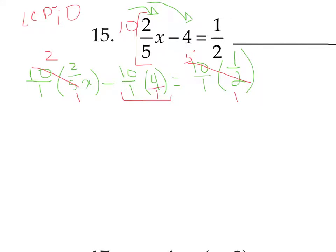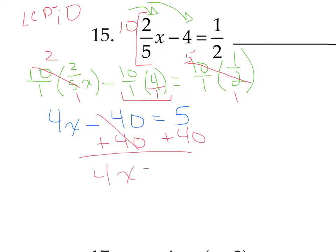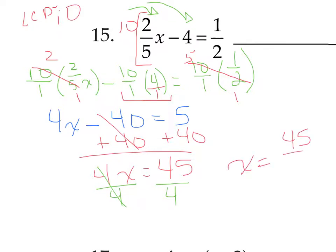2 times 2 times x makes 4x. Minus 10 times 4 makes 40. Equals 5 times 1 which is 5. This is much easier to solve. Add 40 to both sides: 4x equals 45. Then divide by the coefficient 4. x equals 45 over 4. This doesn't reduce — it's already reduced. It's perfectly fine to leave answers as improper fractions; in algebra we prefer that over mixed numbers.